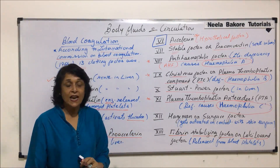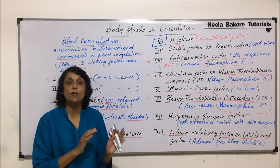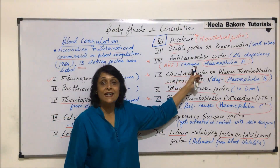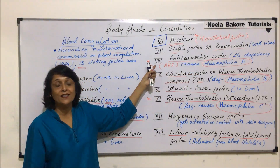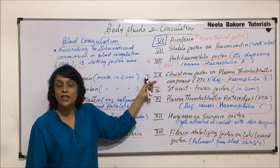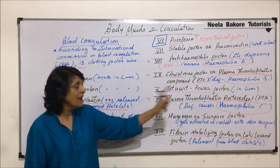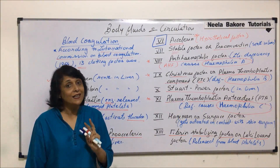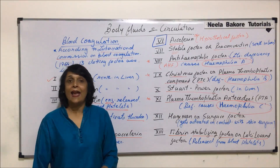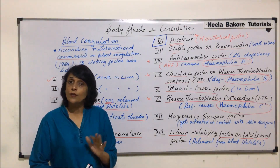Hemophilia A, B, and C all refer to the same condition where blood clotting time is delayed. If the delay is due to absence of factor 8, it is Hemophilia A. If due to factor 9, it is Hemophilia B. If due to deficiency of factor 11, it is Hemophilia C.